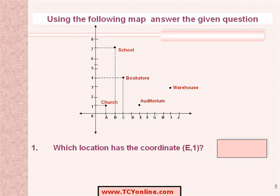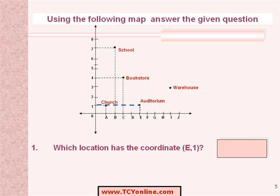We know that e represents the position of the point along the x-axis. Similarly, 1 represents the position of the point along the y-axis. To find the location of the point, we will draw two lines from E and 1. The point of intersection of these two straight lines will give the position. Therefore, we find that E and 1 intersect at the auditorium. Therefore, the location of this coordinate would be the auditorium.